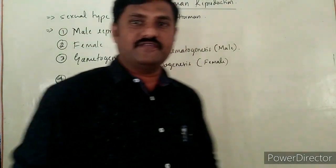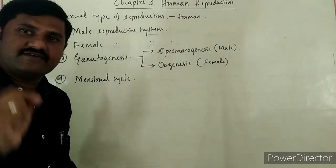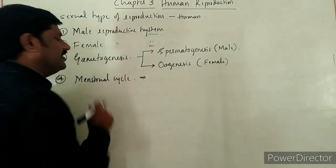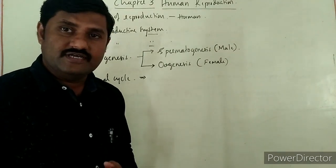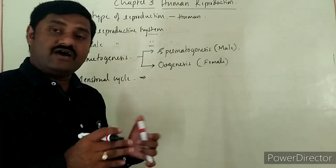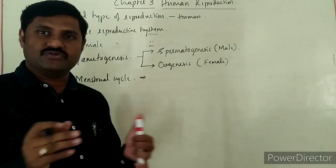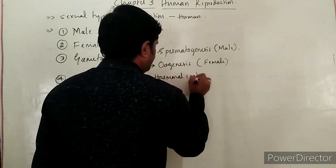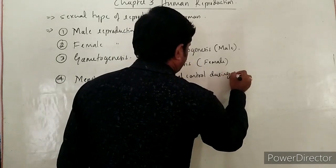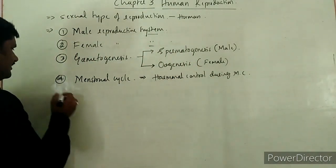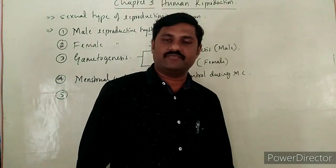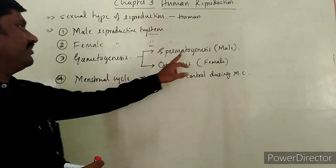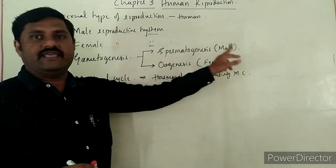The menstrual cycle is one of the important events occurring only in females, which we study in detail. Along with this, there is hormonal control during the course of the menstrual cycle — how hormones are released and regulated during the menstrual cycle — which we also study here. Already we have studied spermatogenesis where sperms are produced, and oogenesis where the egg cell is produced.